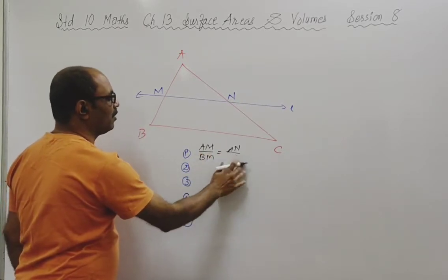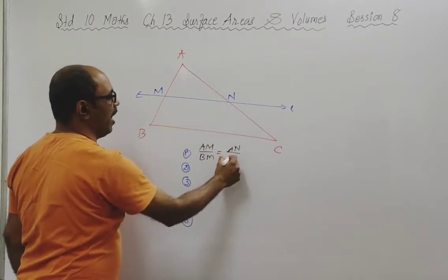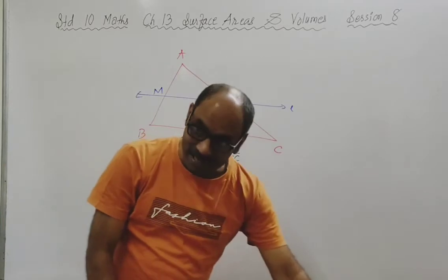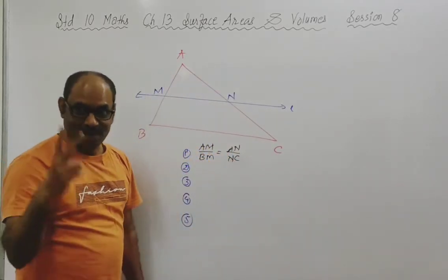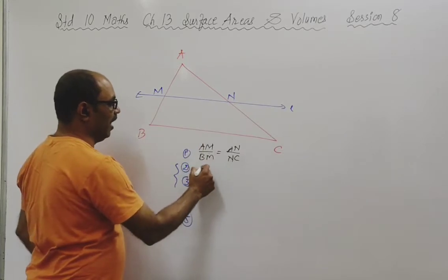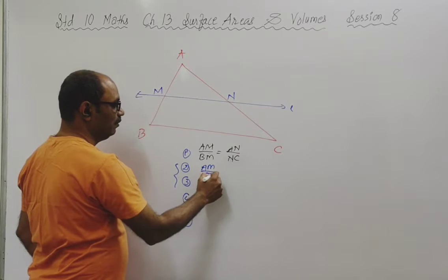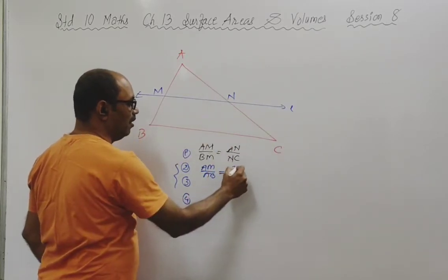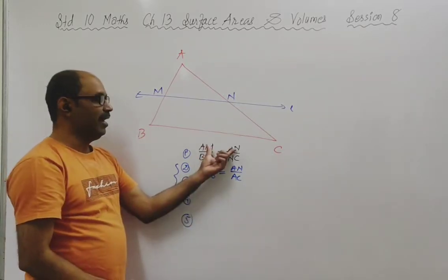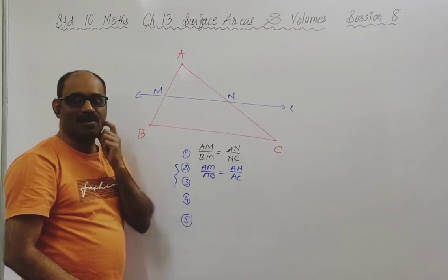If you talk about Theorem 6.1, it states AM upon AB is equal to AN upon AC. From this result we get two more results. That is AM upon AB equals AN upon AC, and adding one to both sides gives further results.